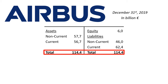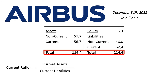To put things in perspective, I always calculate as a minimum two financial ratios for the statement of financial position. The current ratio — current assets divided by current liabilities — is 0.9 for Airbus. For every euro of current liabilities, there is 90 cents of current assets available. Equity as a percentage of the balance sheet total is just 5.2%, fairly low compared to what I have seen on the statement of financial position for other companies.